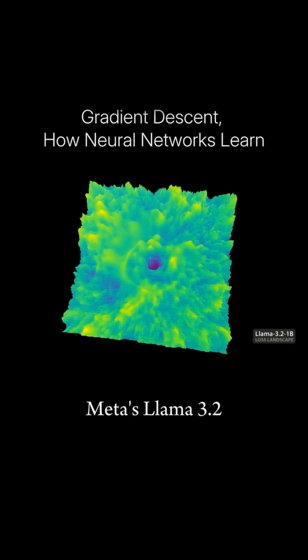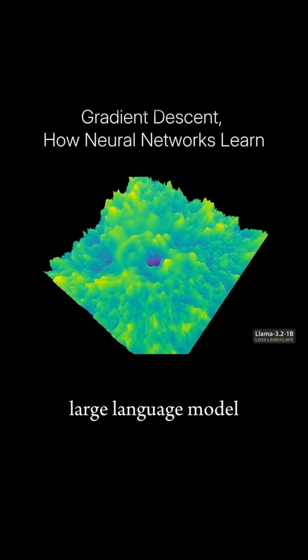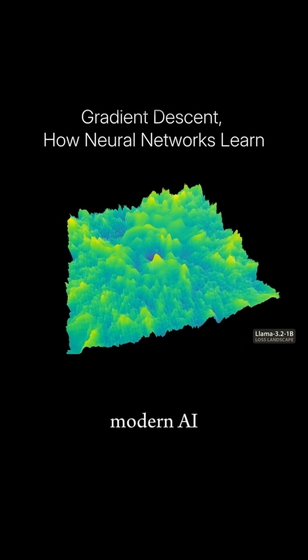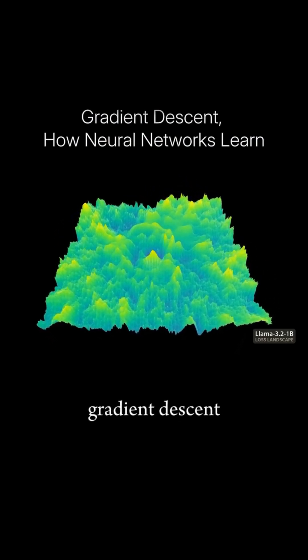This is the loss landscape of Meta's Llama 3.2 Large Language Model. Virtually all modern AI models learn by gradient descent.